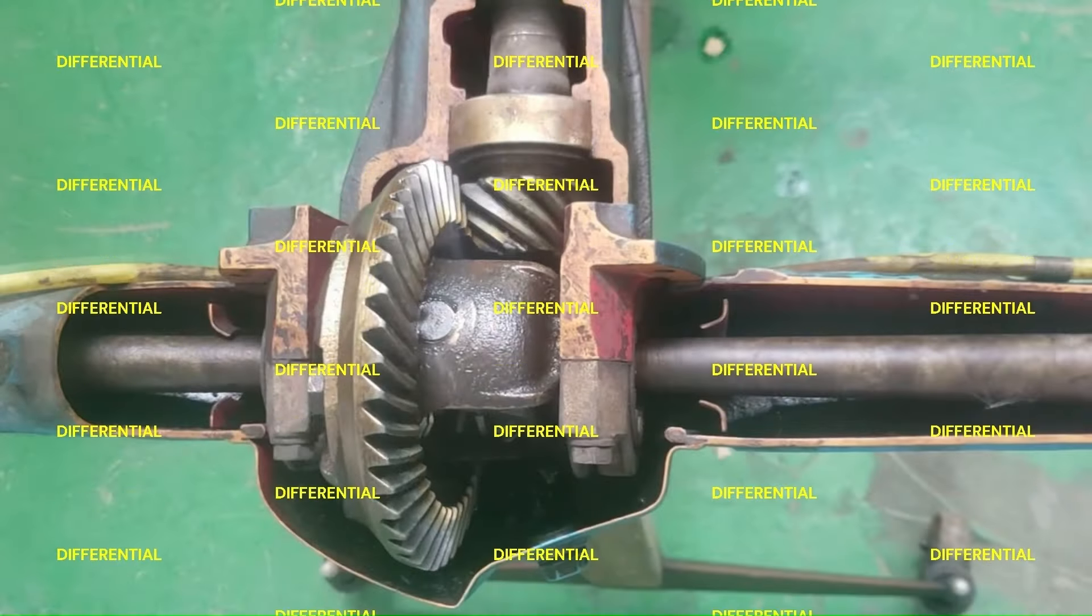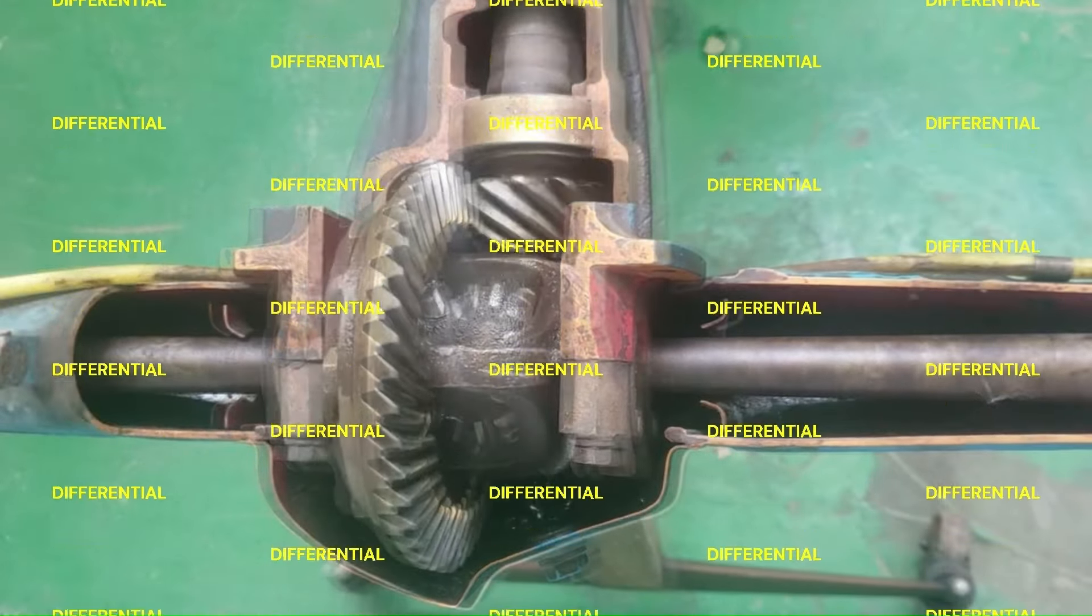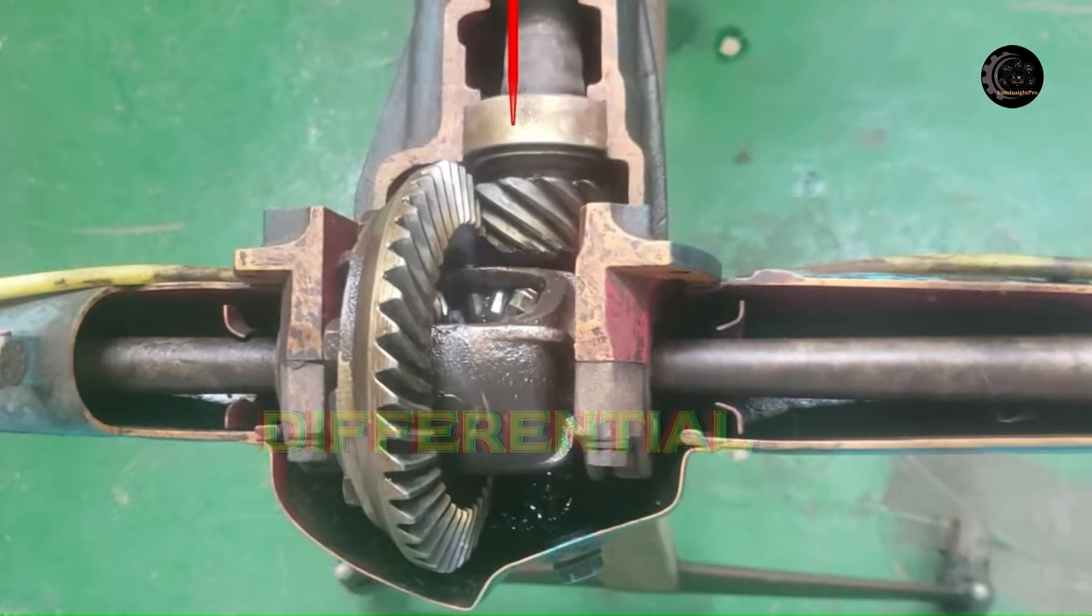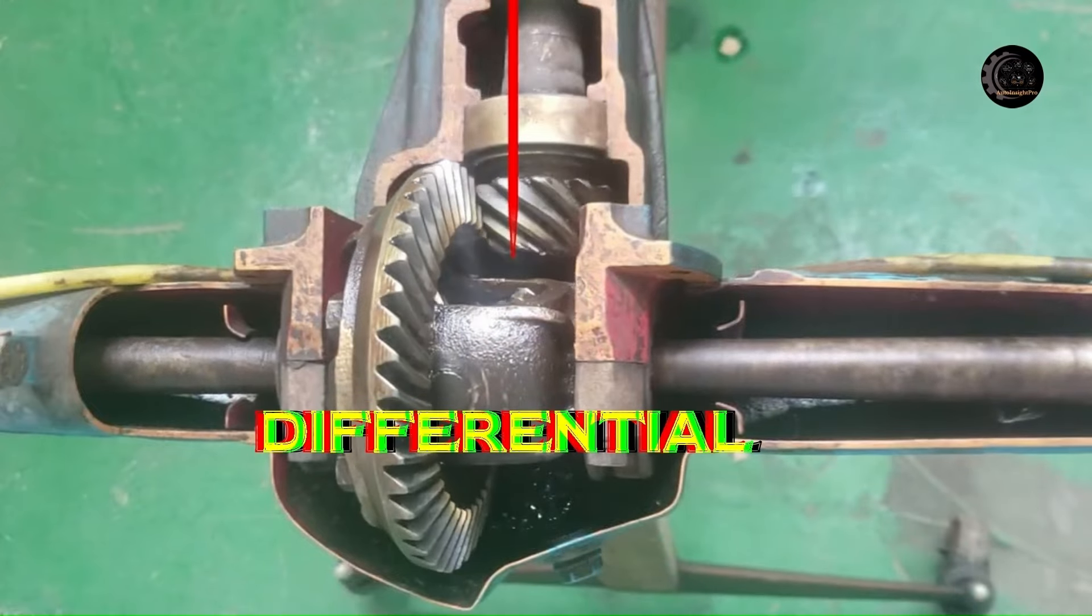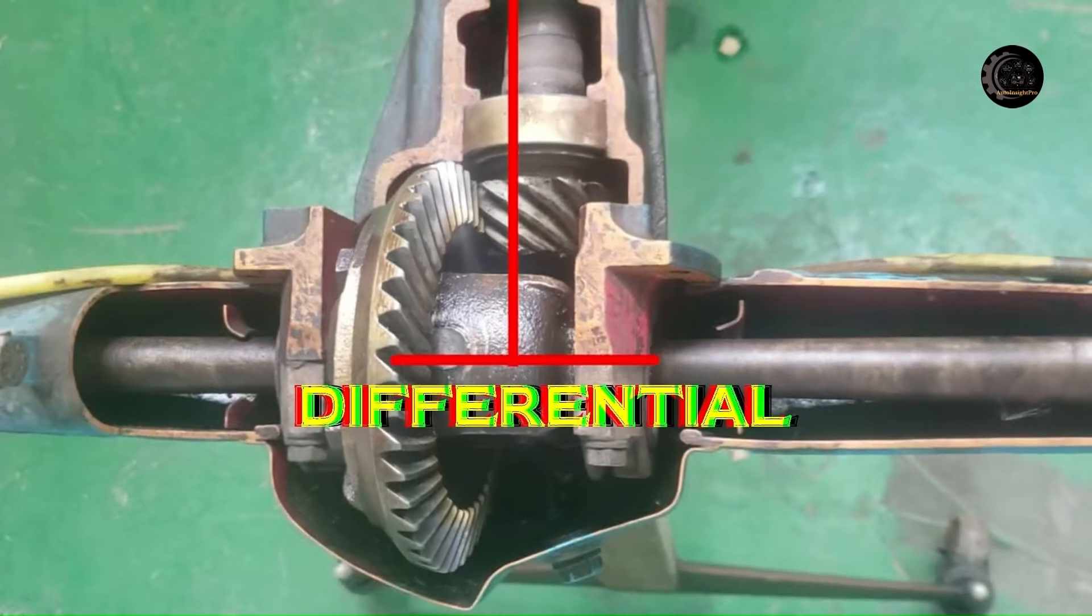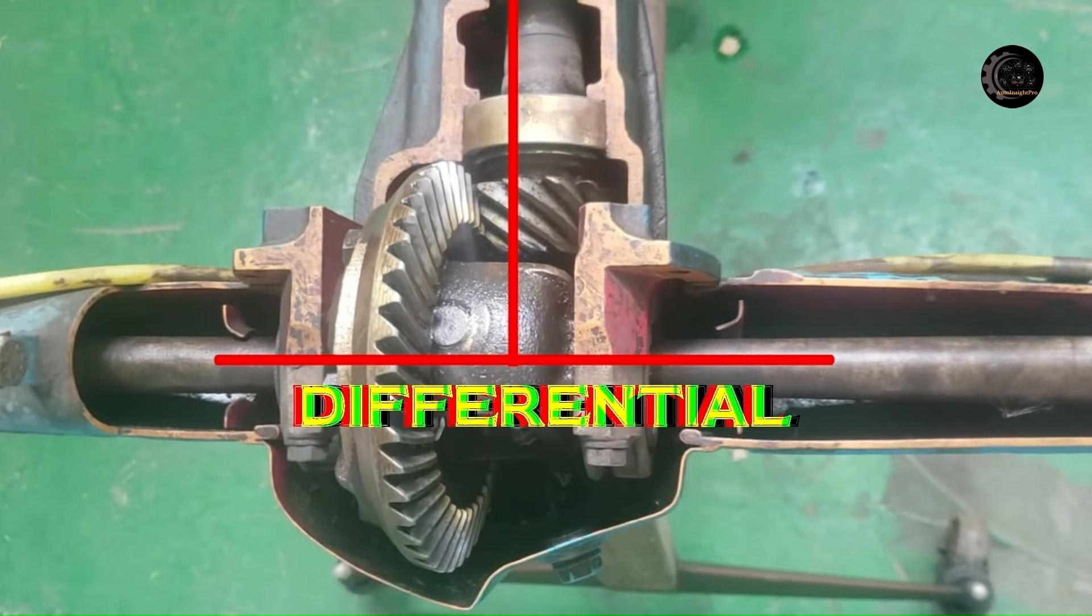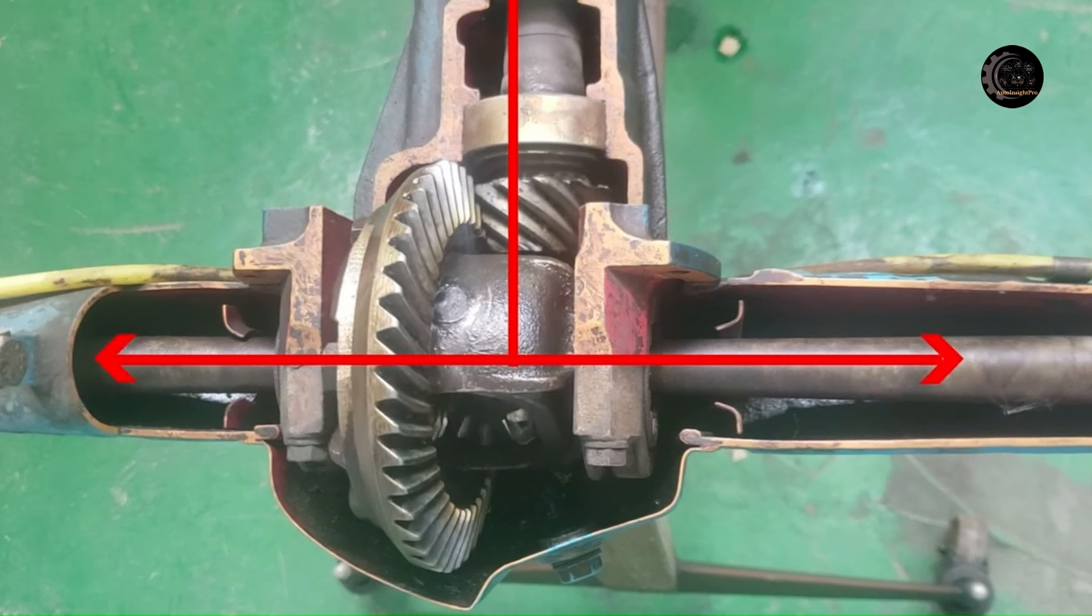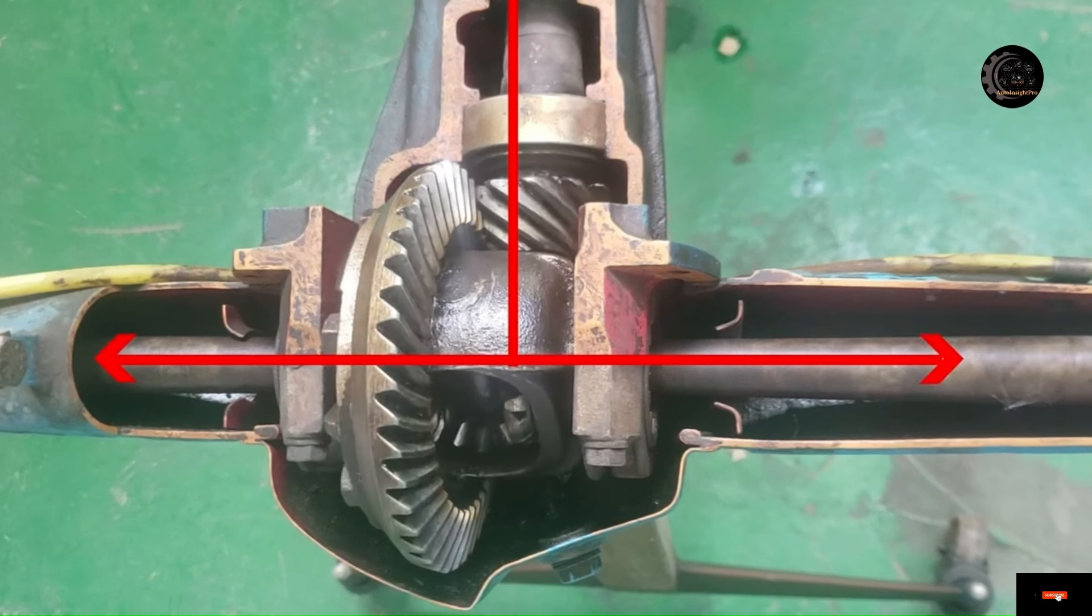The differential is a component that allows the wheels of your vehicle to spin at different speeds so it can turn corners. If a vehicle only ever traveled in a straight line, there wouldn't be a need for a differential. But because a vehicle must be able to turn, a differential is required.